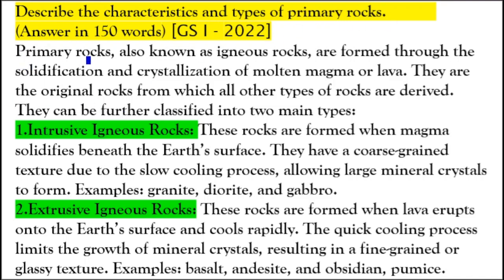Primary rocks, also known as igneous rocks, are formed through the solidification and crystallization of molten magma or lava. They are the original rocks from which all other types of rocks are derived. They can be further classified into two main types: intrusive igneous rocks and extrusive igneous rocks.